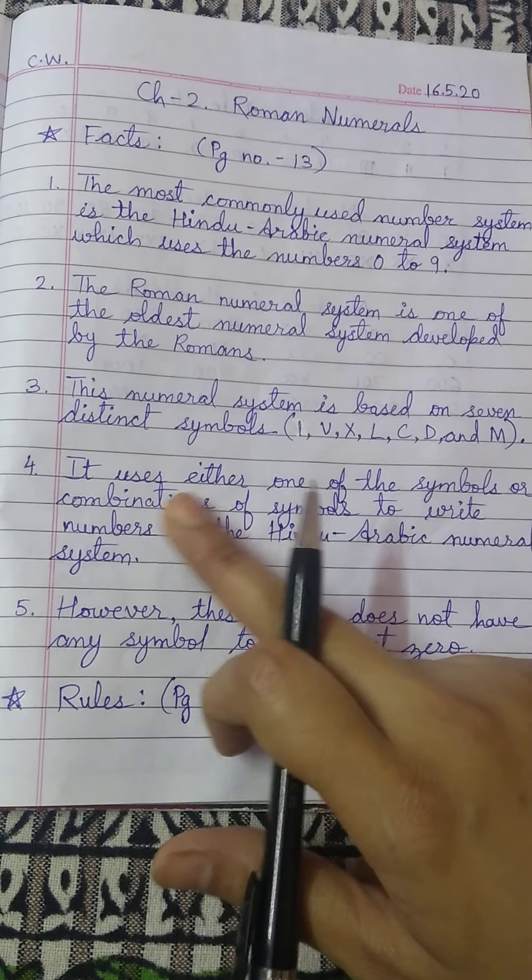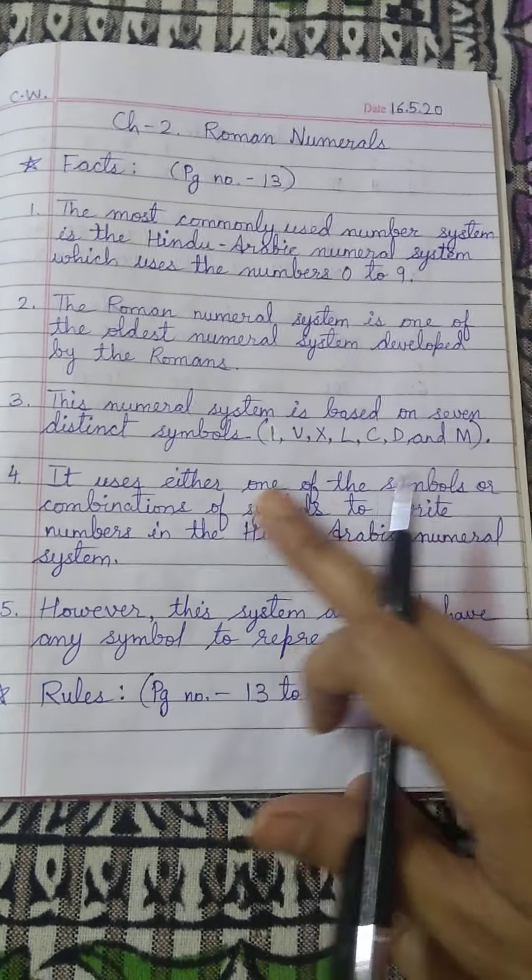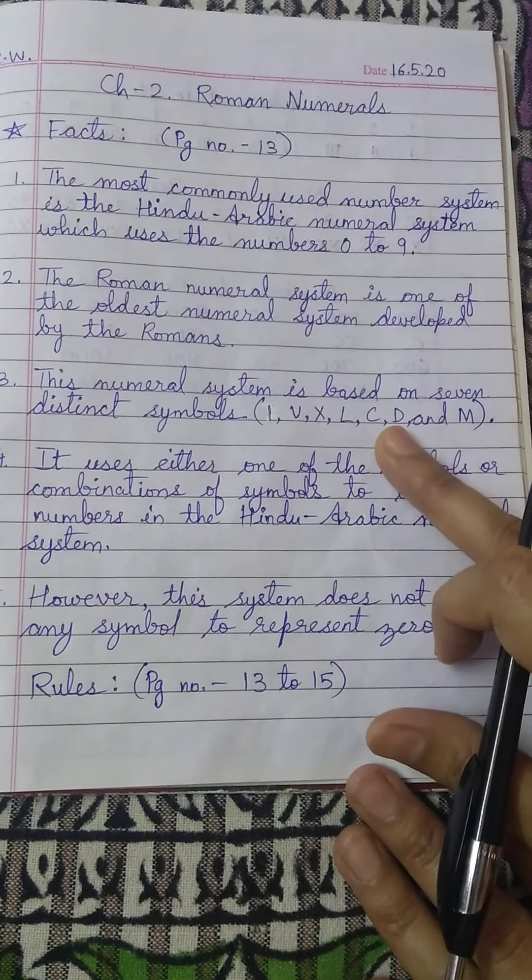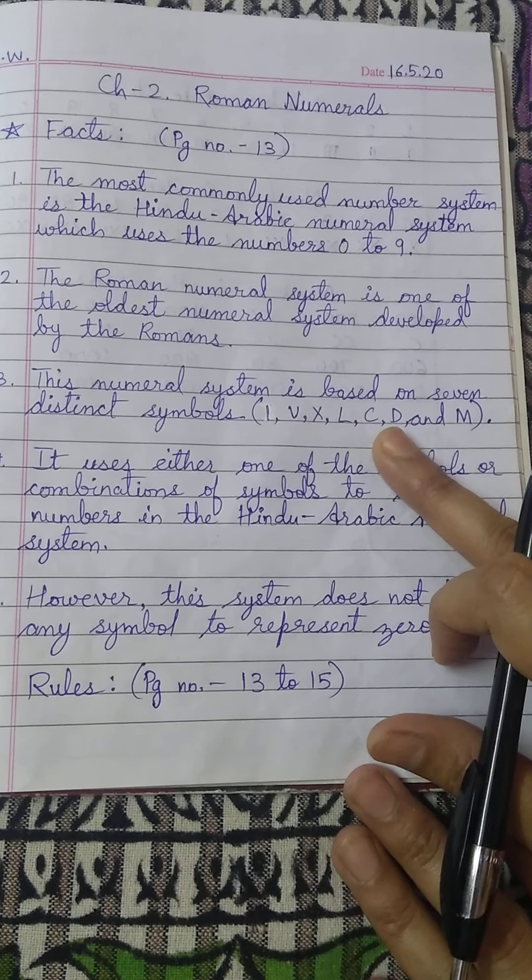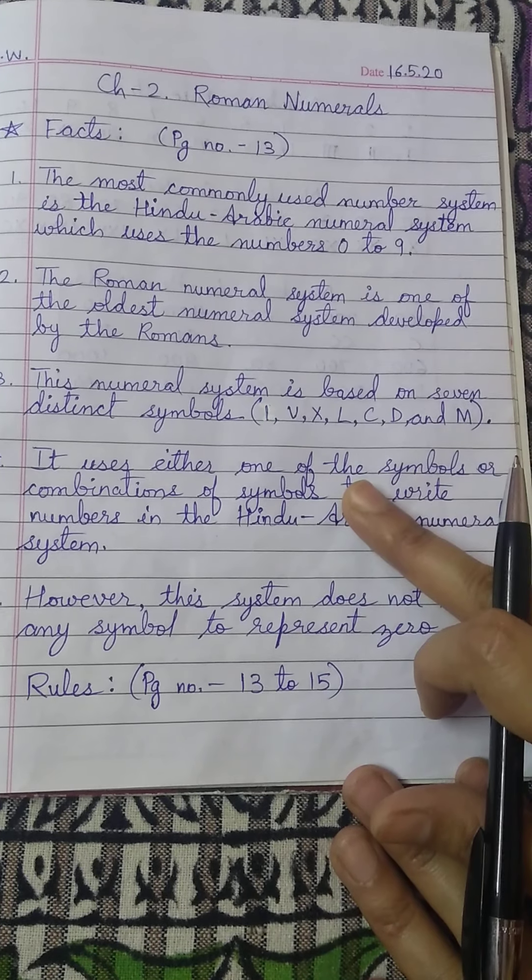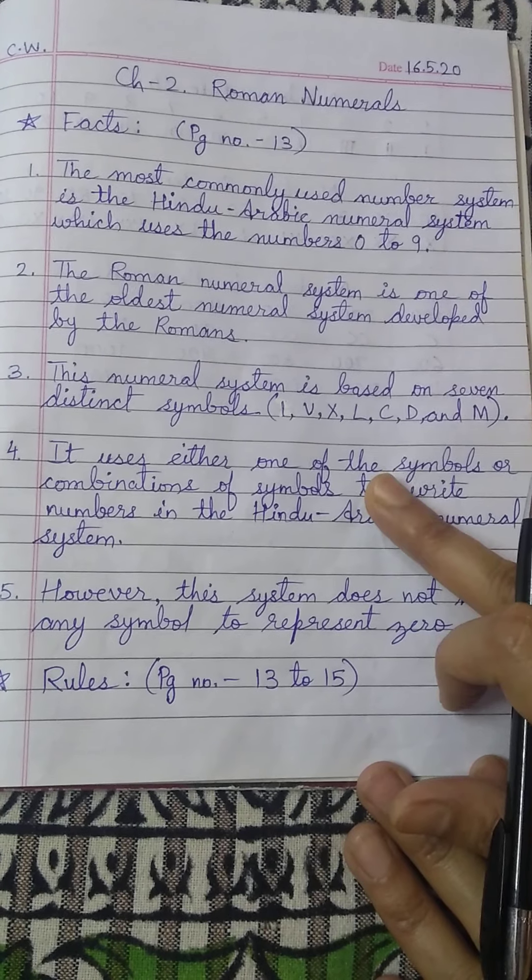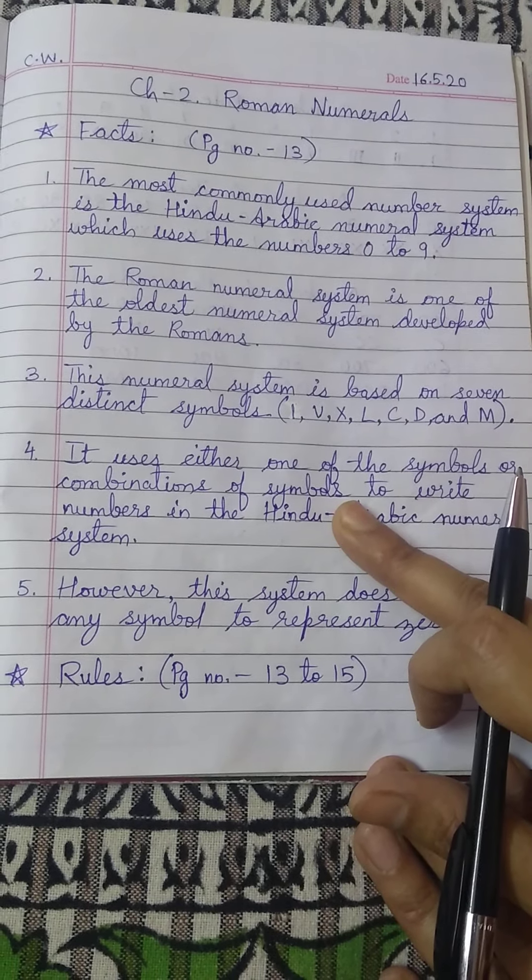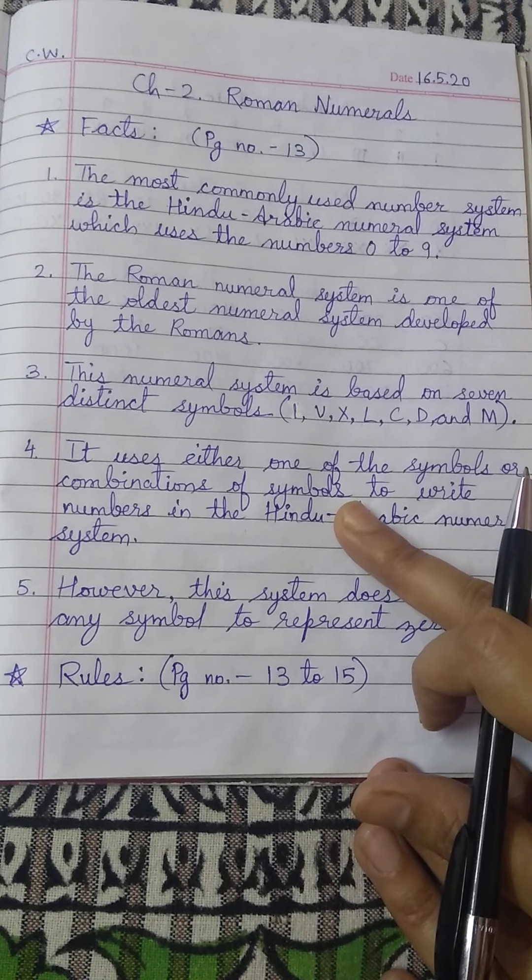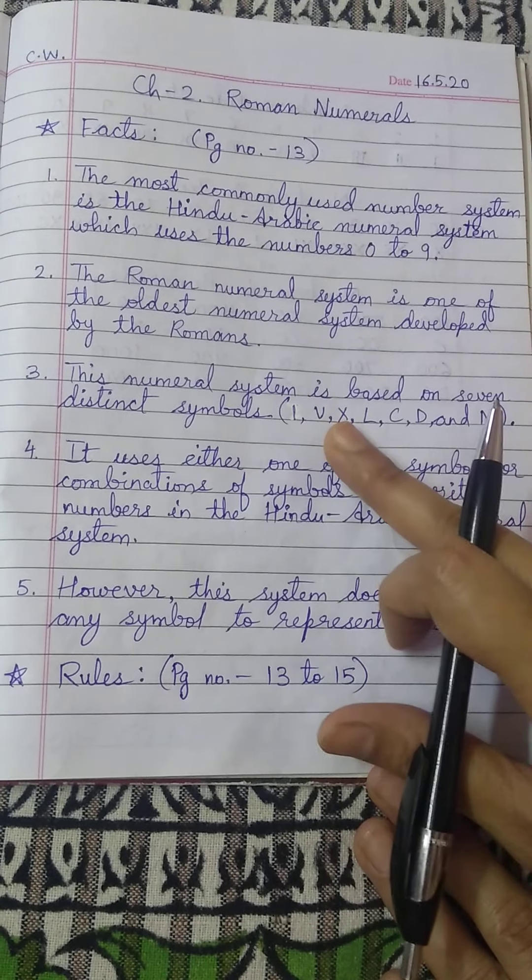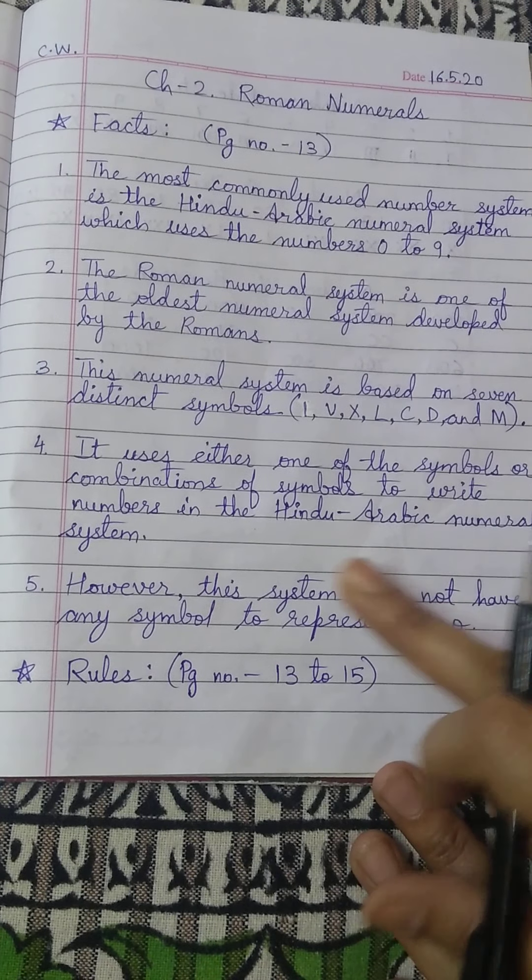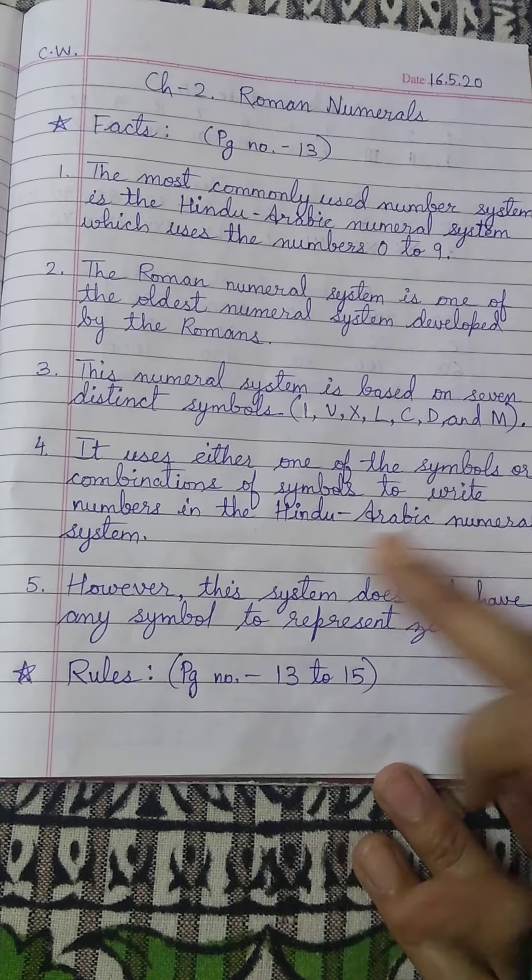Number 4 is it uses, that means the roman numeral system uses either one of the symbols. It uses either I, C. C means you know 100. I means 1. So this system either uses one of the symbol or combination of symbol. When you will go to class 6 you will write VI. So it's a combination of two symbols.